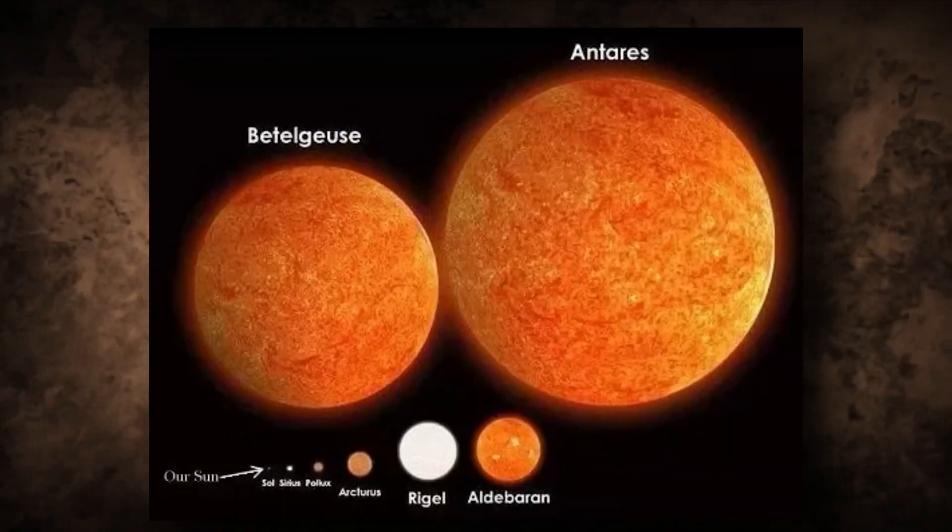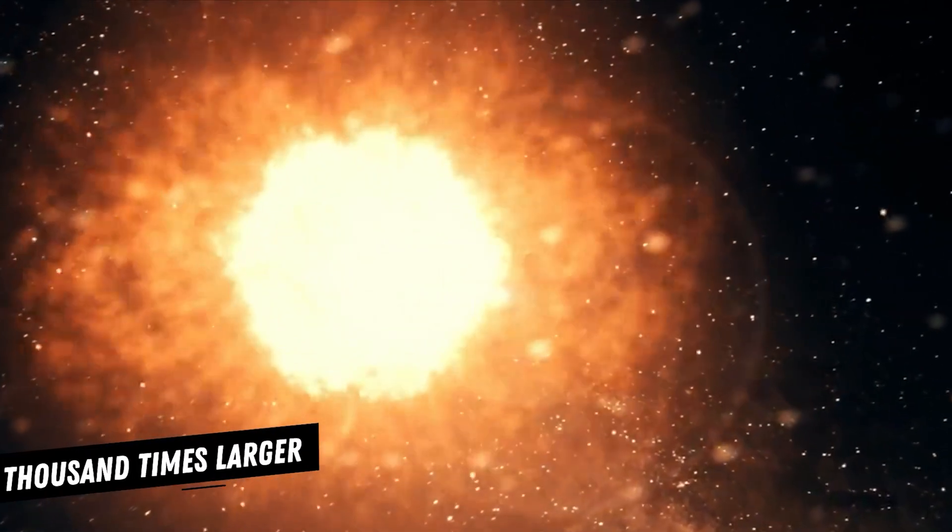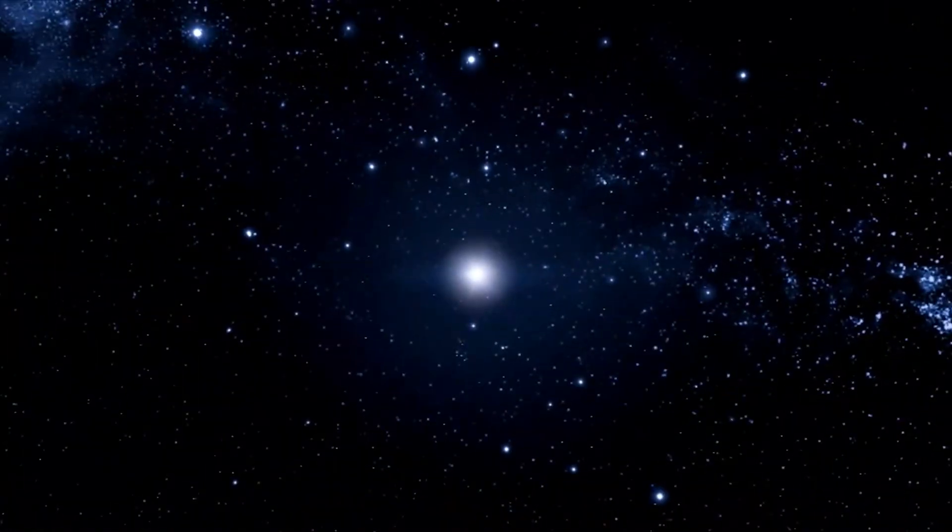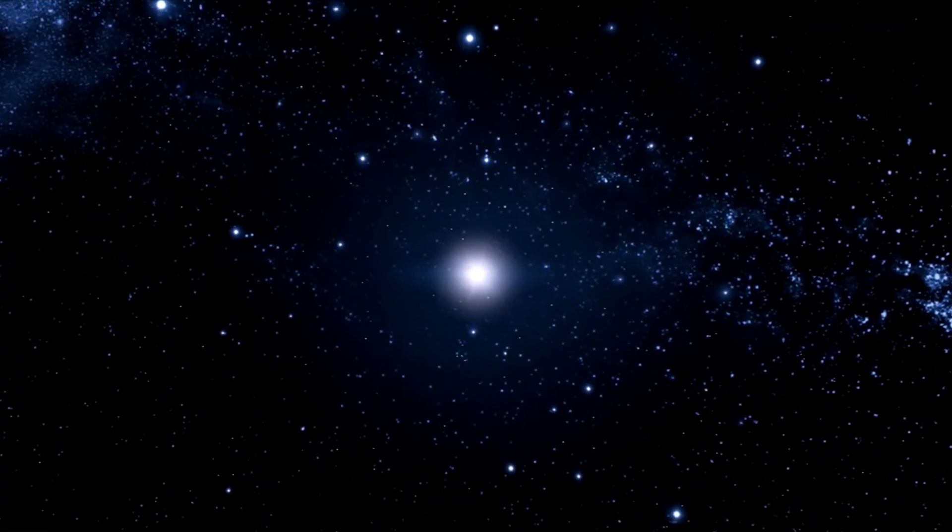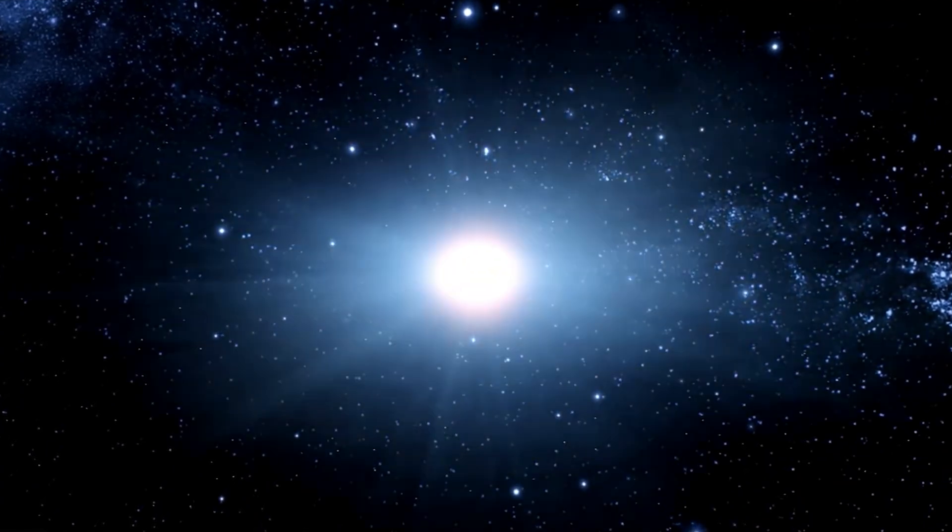Compared to our sun, Betelgeuse is incredibly huge. It is more than a thousand times larger in diameter. If we put it in our solar system, it would swallow up all the inner planets, including Earth and Jupiter.